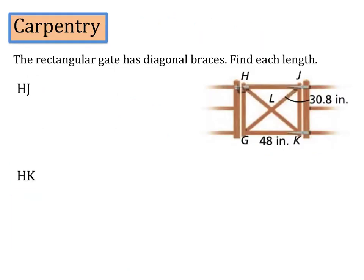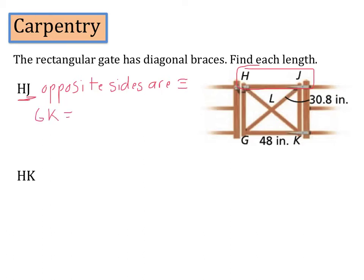Let's use our knowledge of those theorems to answer these questions about rectangles. The rectangular gate has diagonal braces — let's find each length. The first thing we want to find is HJ, which is this segment right here. Since a rectangle is a parallelogram, we know that opposite sides are congruent. The side opposite HJ is GK, and if GK equals 48 inches, then HJ equals 48 inches as well.